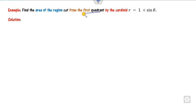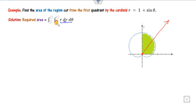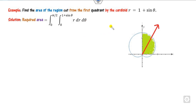Now a polar coordinate example. Consider the cardioid r = 1 + sin θ, and find the area only in the first quadrant. The shaded portion is in the first quadrant. Since it is polar, dx dy is replaced by r dr dθ. The limits of r go from 0 to 1 + sin θ. The angle θ goes from 0 to π/2. Integrate r to get r²/2, giving (1 + sin θ)²/2, then integrate with respect to θ.